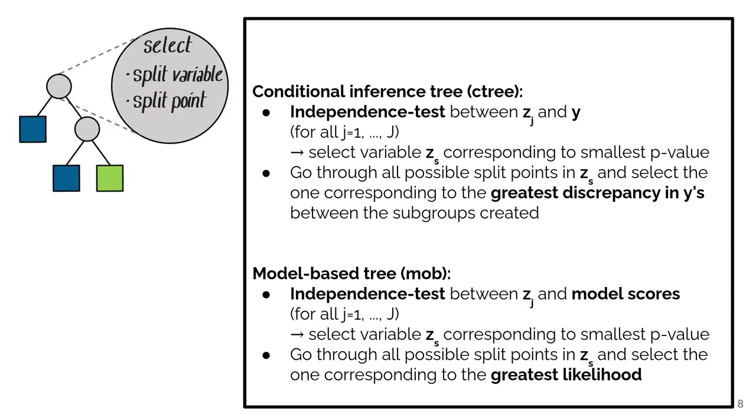Now let's look at another set of algorithms. Here we're comparing the conditional inference trees with model-based trees. Both of these algorithms are implemented in partykit, and here we see that they're actually very similar. So again in mob we're doing an independence test, but just this time we're not testing between zj and y but zj and the model scores.